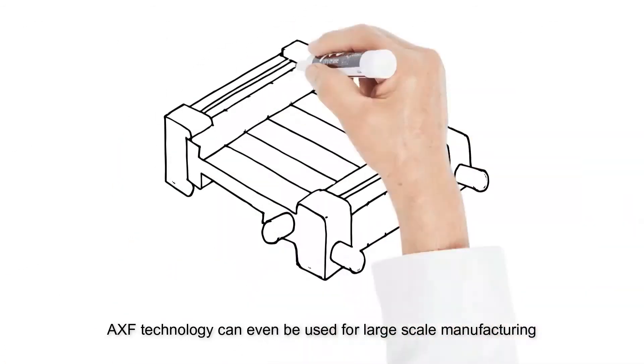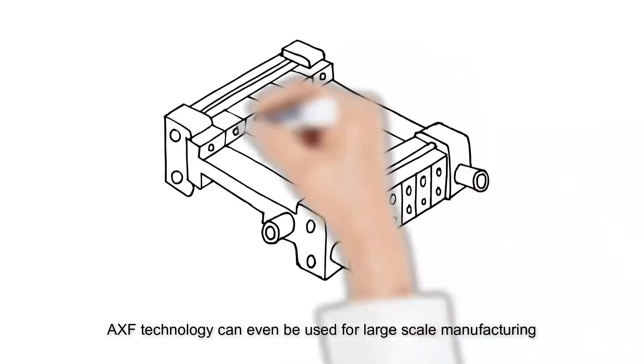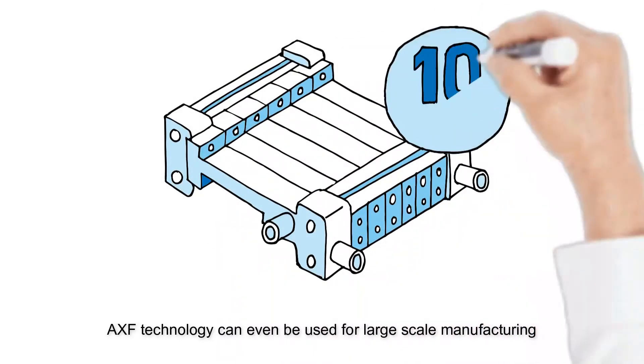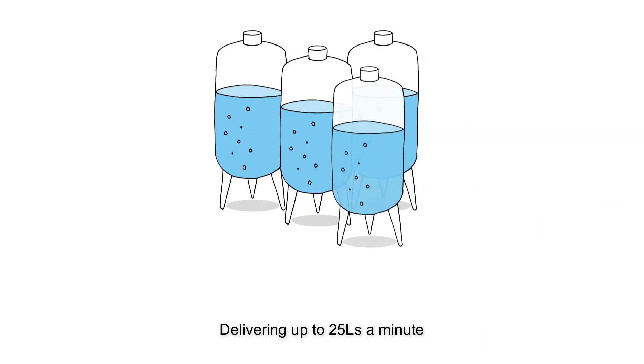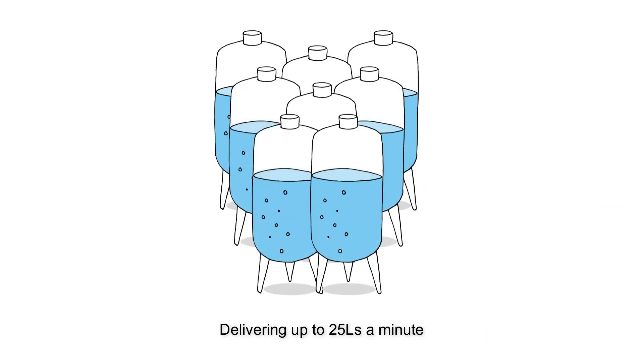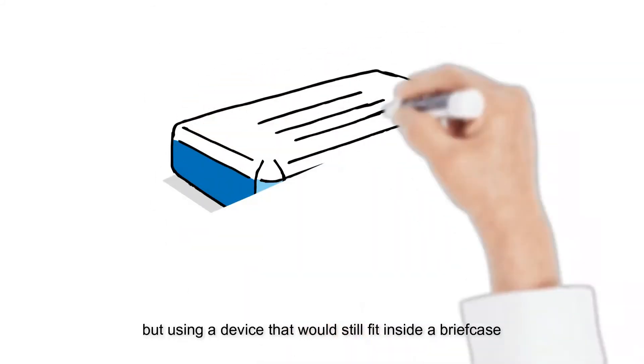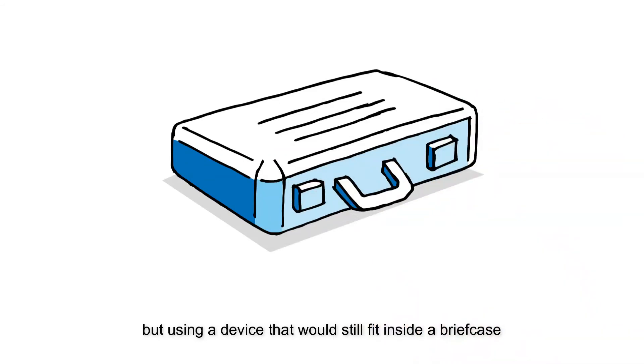Ultimately, micropore's advanced cross-flow process can be scaled to a device with over 10 million pores, with the potential for a throughput of up to 25 liters per minute, from a device that would still fit inside a small briefcase.